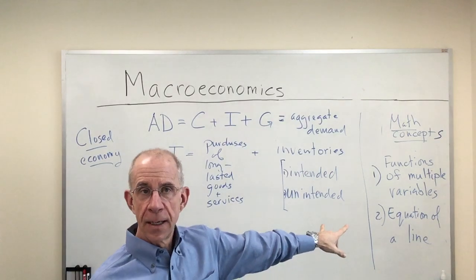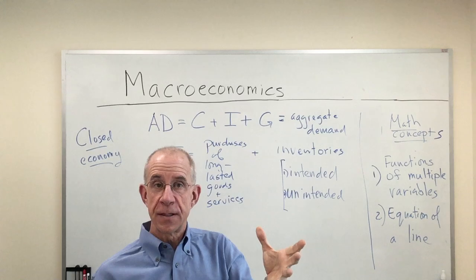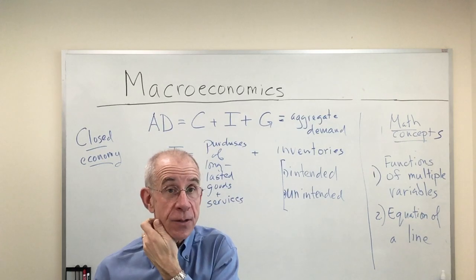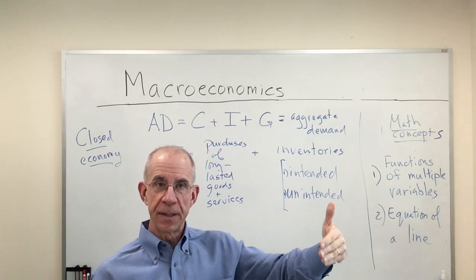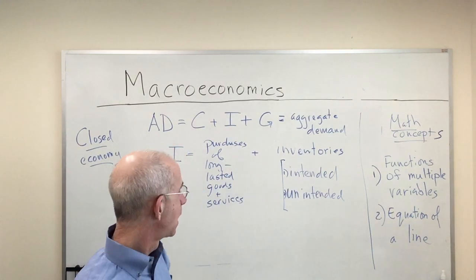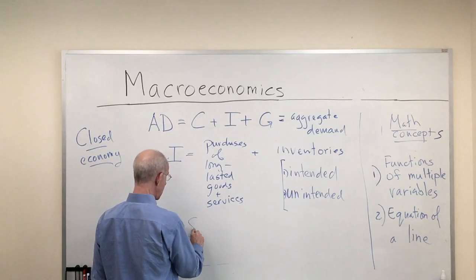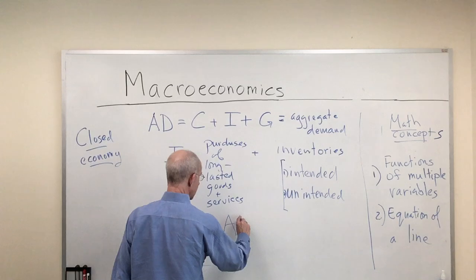So these unintended inventories is going to be an important indicator of a situation where you might have a recession, where firms are building up unintended inventories that they have not yet sold. So when we talk about aggregate supply equal to aggregate demand,